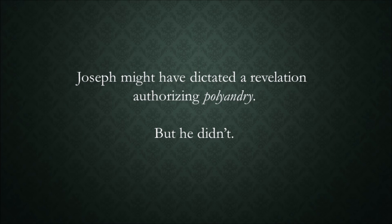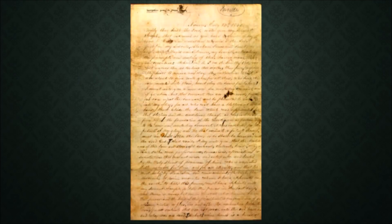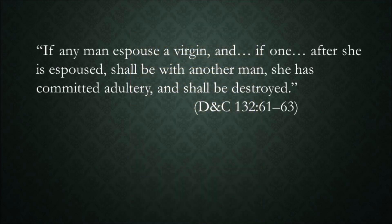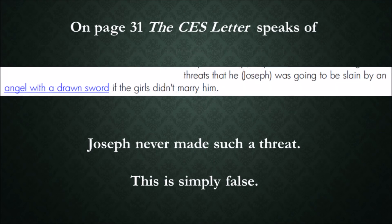Joseph might have dictated a revelation authorizing polyandry, but he didn't. Instead, he dictated a revelation condemning polyandry that states, if any man espouse a virgin, and if one, after she is espoused, shall be with another man, she has committed adultery and shall be destroyed. So we are left wondering what Joseph might have said to convince a woman to go against social and moral conventions. On page 31, the CES Letter speaks of threats that Joseph was going to be slain by an angel with a drawn sword if the girls didn't marry him. Joseph never made such a threat. This is simply false.